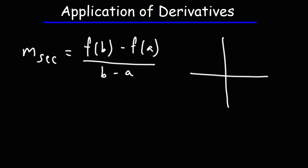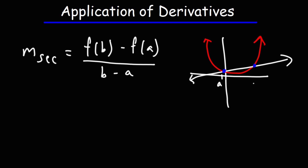If you have a curve, a secant line touches the curve at two points. The first point at which it touches the curve is point A, and the second point is point B. That is the average rate of change formula.